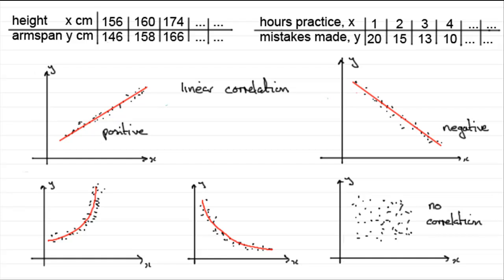Now what I'm going to do in the next few tutorials: we're going to look at linear correlation. We're going to work out a statistic called Pearson's product moment correlation coefficient, or just simply the product moment correlation coefficient, which measures how close these points are to a straight line.